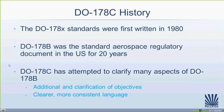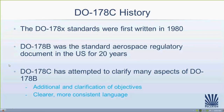The predecessor DO-178B was the standard aerospace regulatory document in the United States — and really around the world — for 20 years. It remained untouched for a long time. But recently, the FAA released DO-178C just to clarify a lot of the language and objectives within the standard. The two standards are not that far apart — there's just some clarification and more specific language within DO-178C.